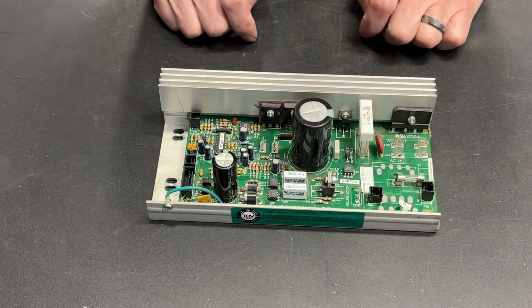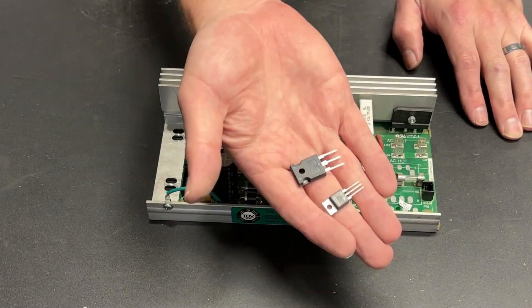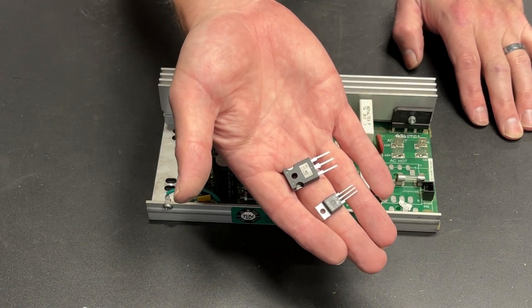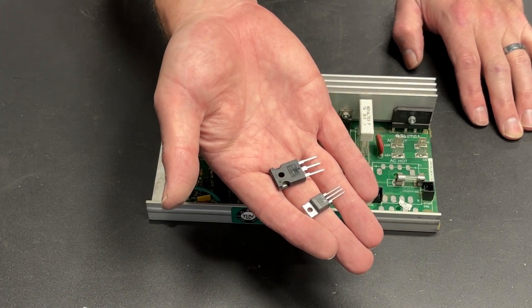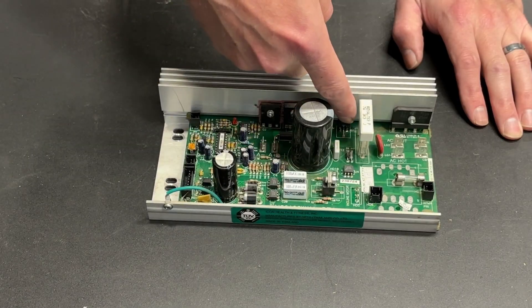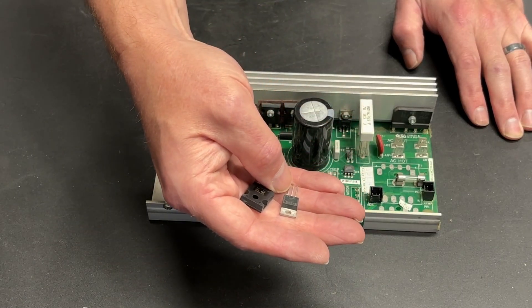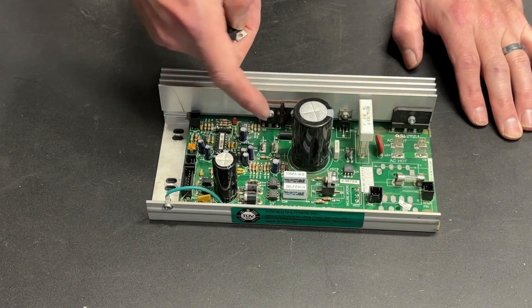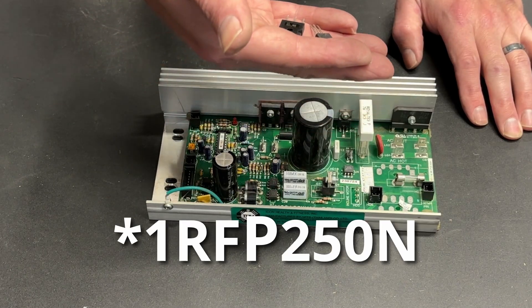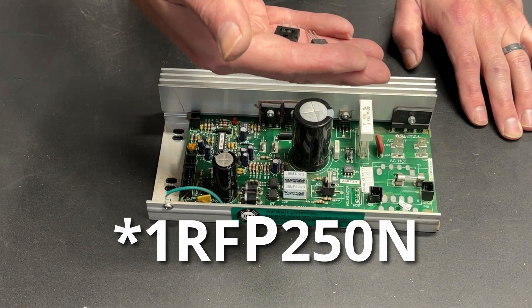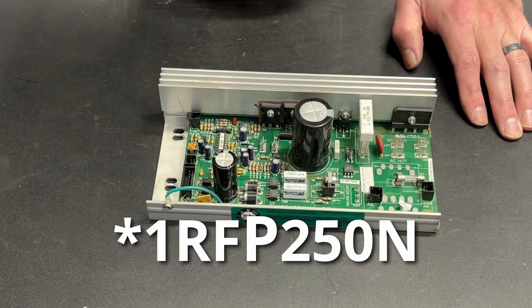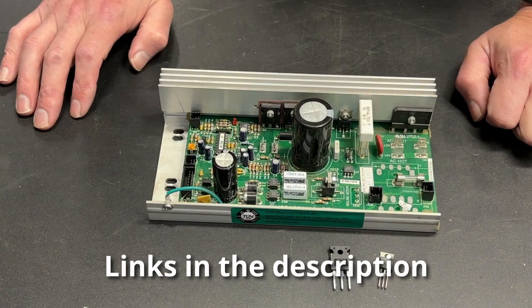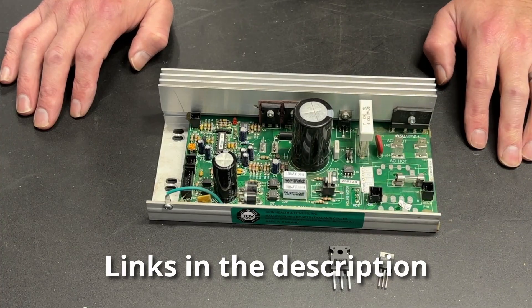Both of those components are available. I picked these up on either eBay or Amazon, I can't remember at the moment. And when I got them, I got them in lots of 5 or 10. The SCR is part number S4025L, and the MOSFET is 1RF250N. If I can find good listings for those two parts, I will end up putting those down in the description.